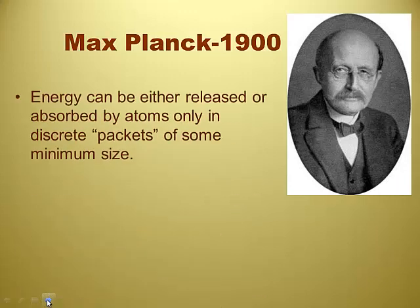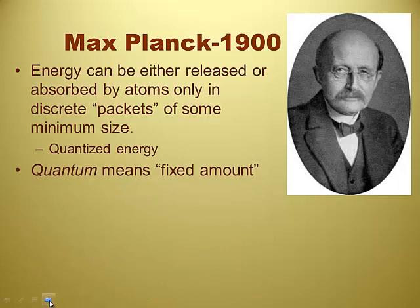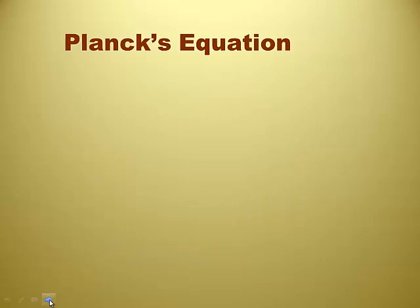Fifty years later, Max Planck. Energy can be either released or absorbed by atoms only in discrete packets of some minimum size. So in other words, energy is chunks. Quantized energy. Little chunks of energy, not a continuous stream. And that makes sense because the word quantum means a fixed amount. When I hear the word quantum, I think quantity. A quantity of energy. So he coins a quantum as the smallest unit of energy that can be emitted or absorbed as electromagnetic radiation. So the least amount to get those colors and those wavelengths. Every atom gives off a different bit of light. Different colors of light.